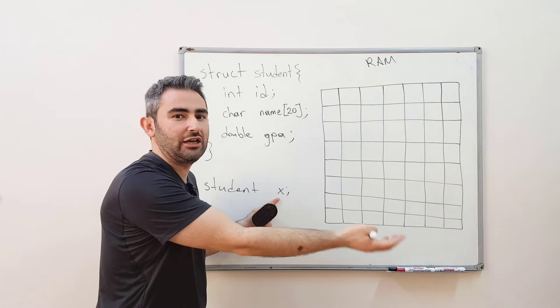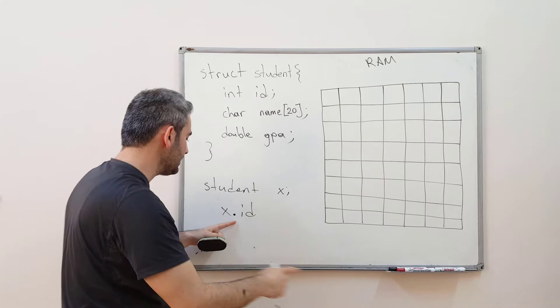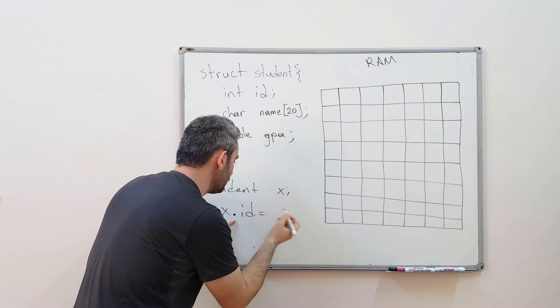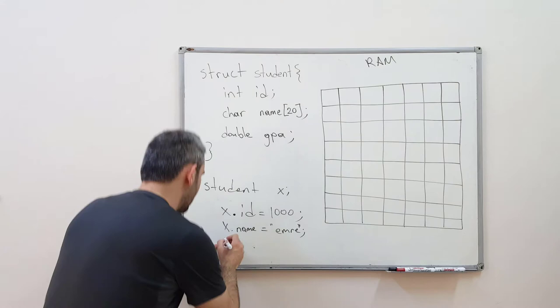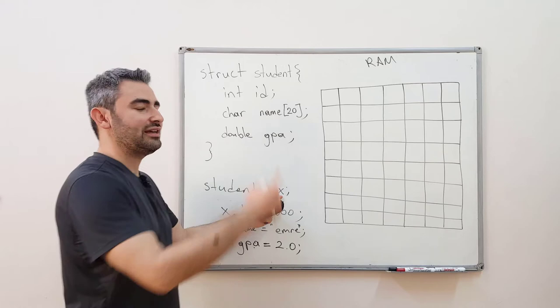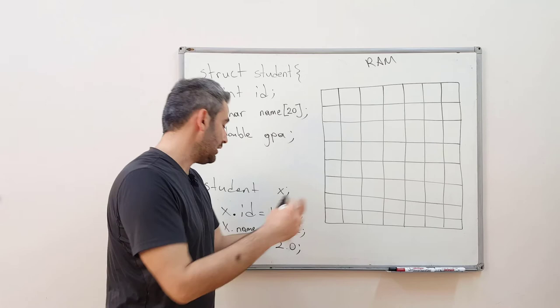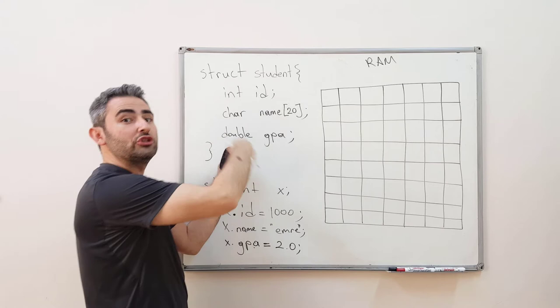Every object will have the features defined inside the structure. Just like an integer x has the value of 5, this x will have three features. Using dot notation, x.id is the student's id. x.name could be 'emre' — my name — and x.gpa could be 2.0, because I'm a lazy student. Instead of x having a single value, this time x is a complex data type, meaning it holds multiple data together.